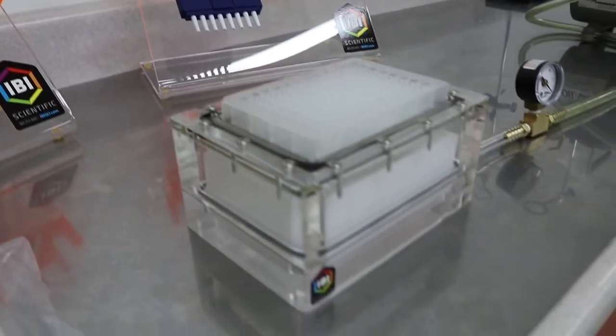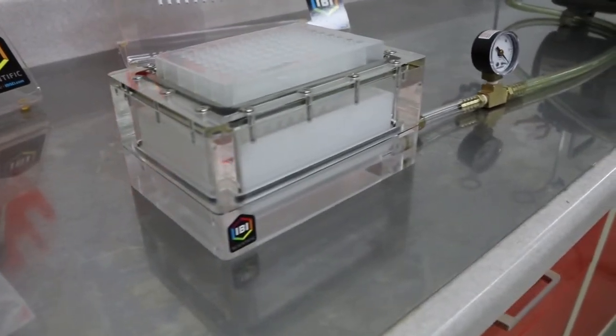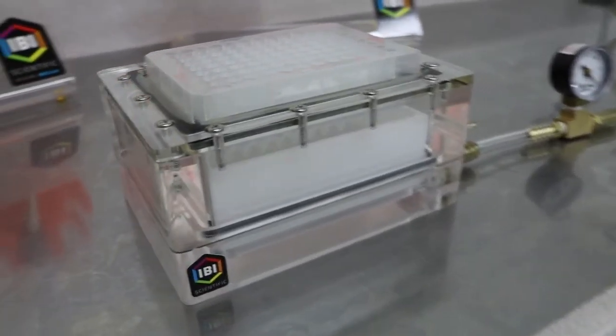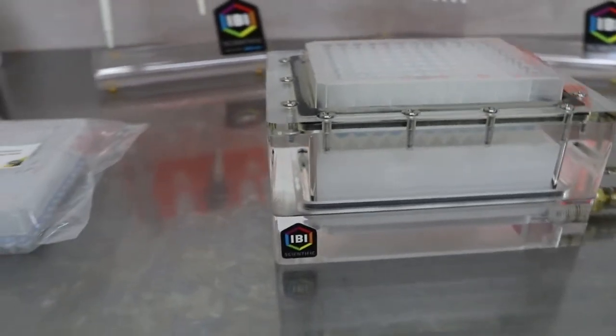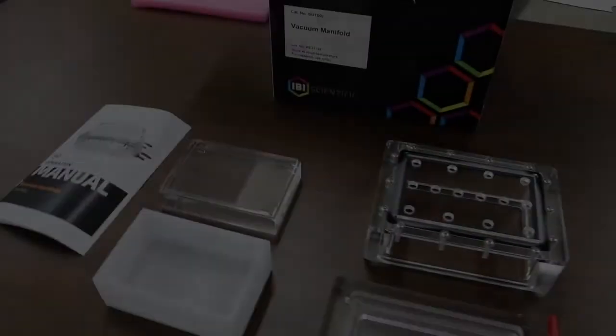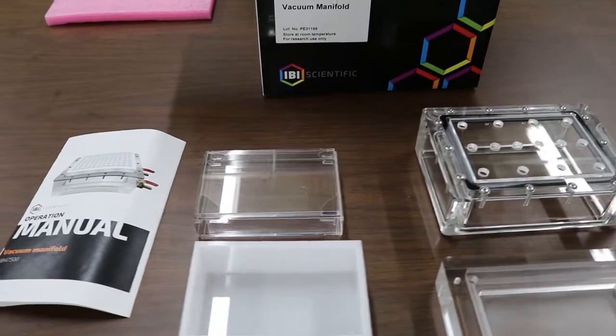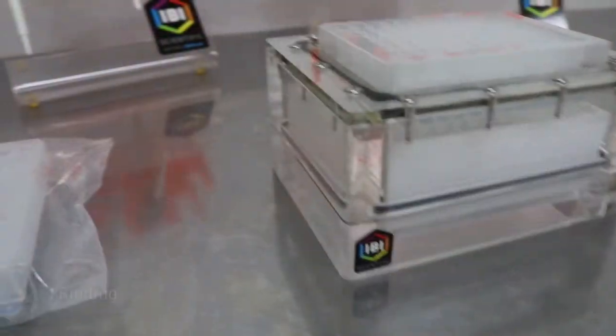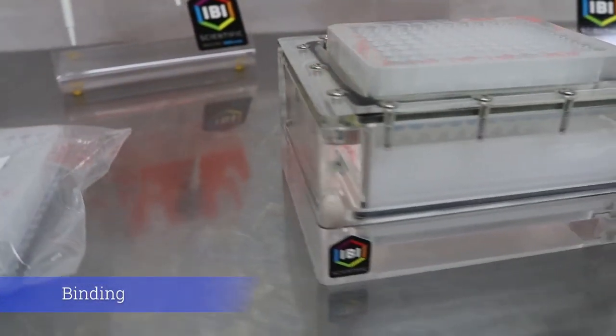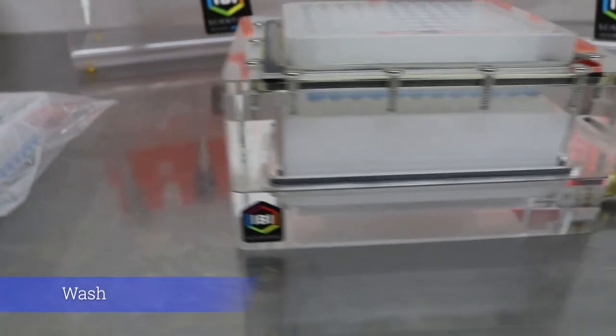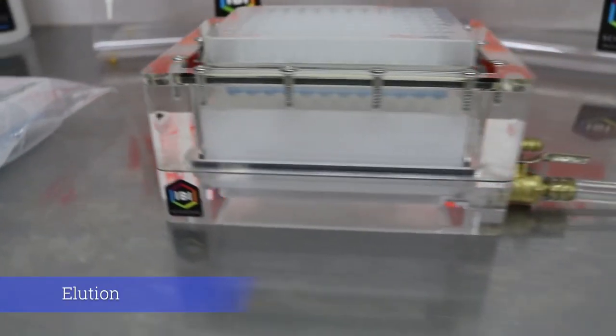Today we will show you in only a few minutes how you can quickly and effectively use IBI Scientific's vacuum manifold to perform a 96-well plate extraction. Most 96-well plate extractions require a binding step, a wash step, followed by an elution step.